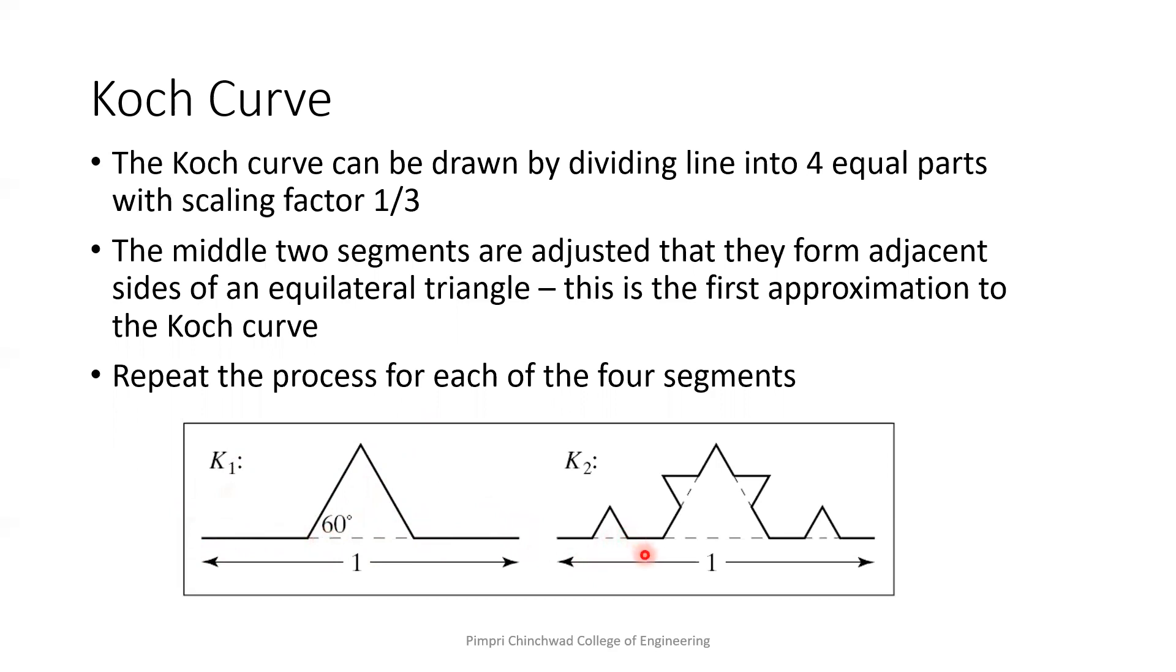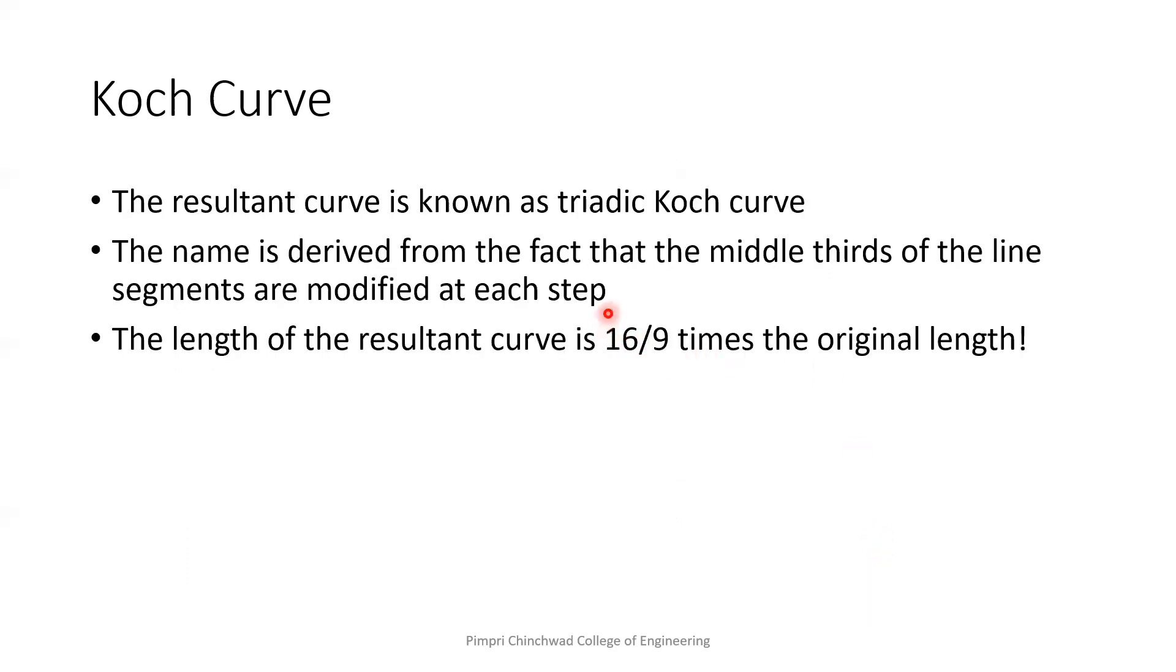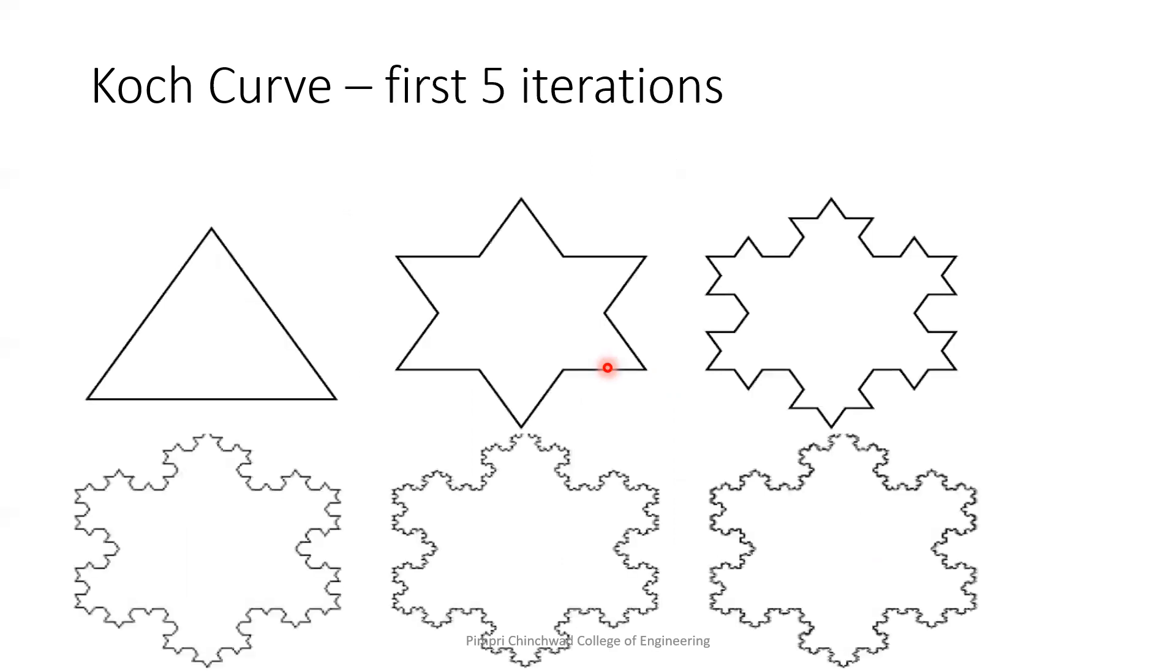Now here we are having four segments and each are having the length of four by three. So the total length is 16 by nine after the second iteration. Now if I divide once again, what will be the next length? 16 into four by nine into three, that means 64 by 27 like that.